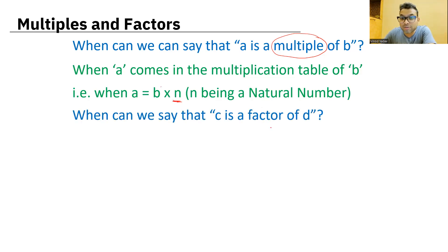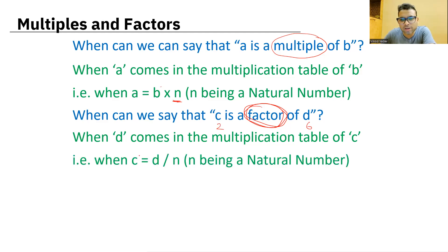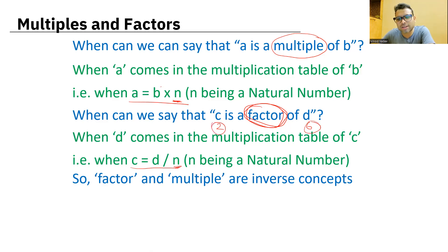Now, when can we say that 'c' is a factor of 'd'? Get very comfortable, very, very clear with this word factor because many people don't understand multiple and factor. And this is the simplest reason because of which they don't understand HCF, LCM, all those things. So when can we say that 'c' is a factor of 'd'? When 'd' comes in the multiplication table of 'c'. Two is a factor of six because six comes in the table of two.